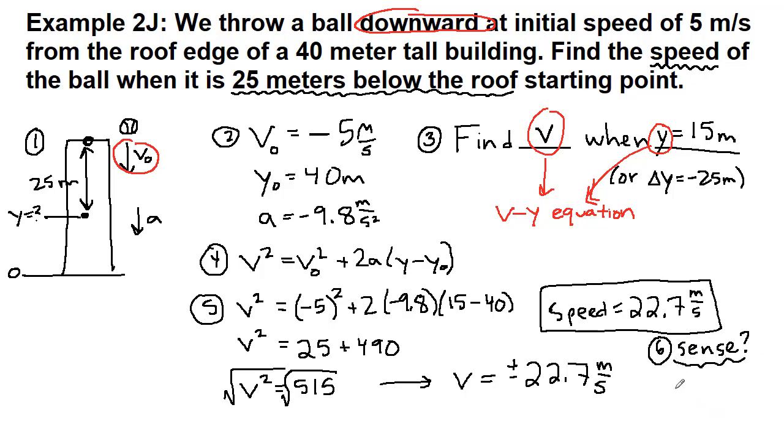If we threw it downwards, then we know that what is going to be true as it falls? Is it going to speed up or is it going to slow down? It's going to speed up. And so our sense check is mostly making sure our number is bigger than five like we expected it to be.